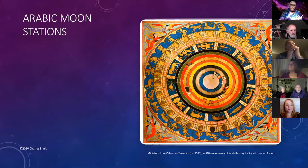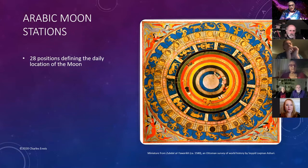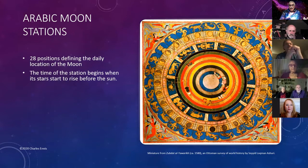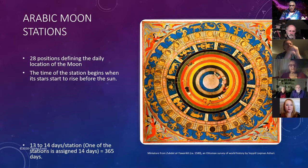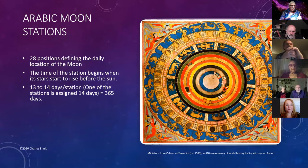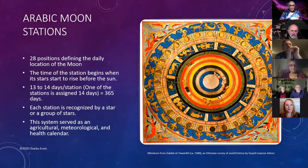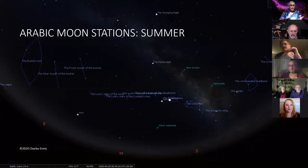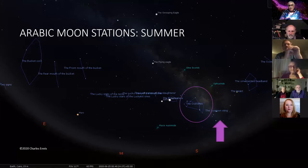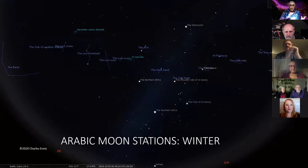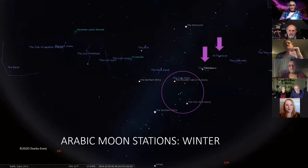The Arabs also had moon stations — 28 positions defining the daily location of the moon. The time of the station begins when the stars start to rise before the sun, with 13 to 14 days per station. Each station is recognized by a star or group of stars, and the system served as an agricultural, meteorological, and health calendar. In the Arabic moon stations, the teapot area has become the ostriches, and the scorpion sting is part of the moon stations. In the winter sky, Orion's Betelgeuse is part of the shoulder station.